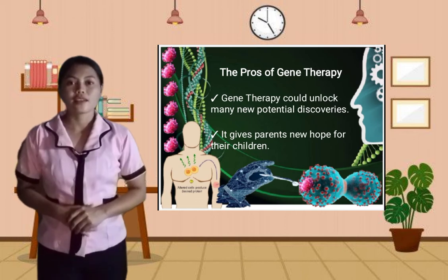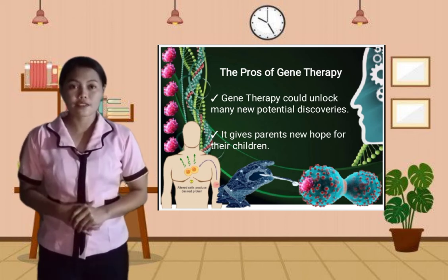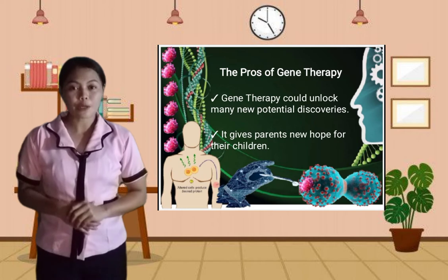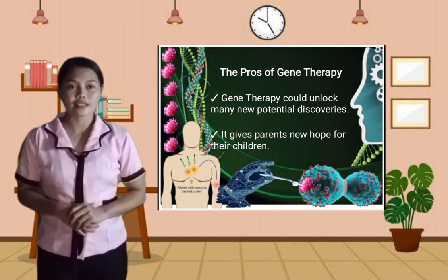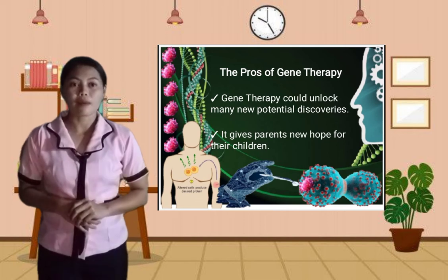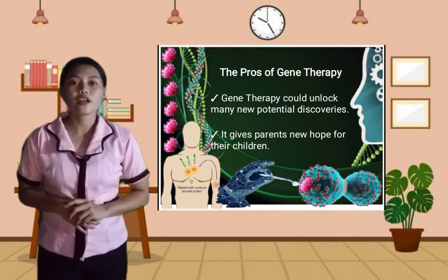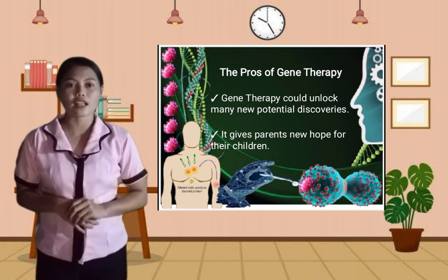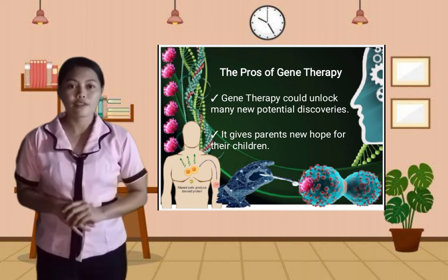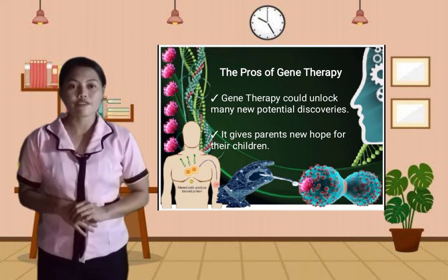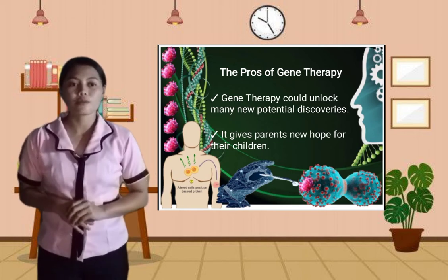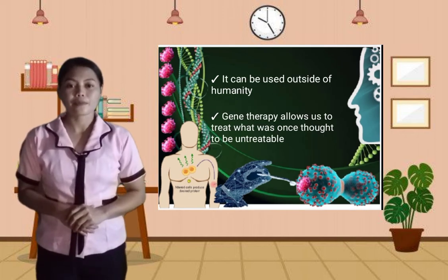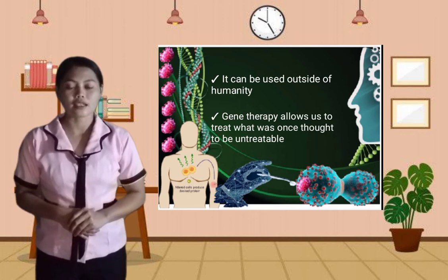The next pro of gene therapy is that it gives parents new hope for their children. According to research, about three percent of all children born in the United States each year are affected by a genetic condition. Many of these disorders and diseases will take the life of the children they affect. Birth defects, for example, are the leading cause of infant death in the U.S., with about 20 percent of all newborn fatalities attributed to birth defects.